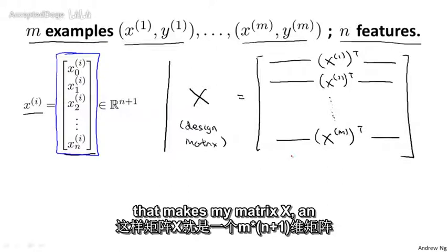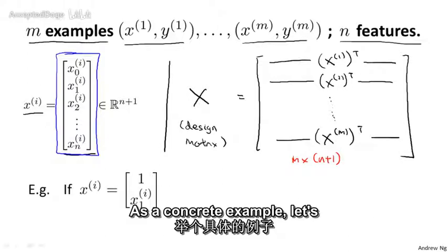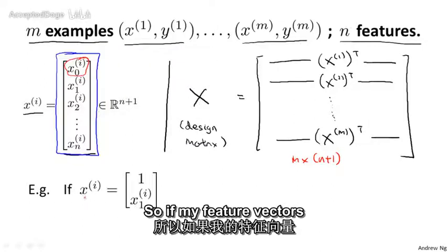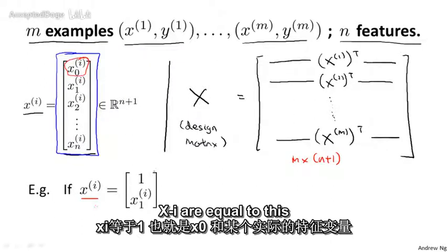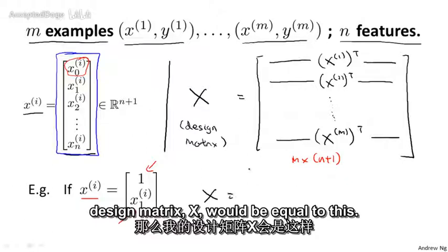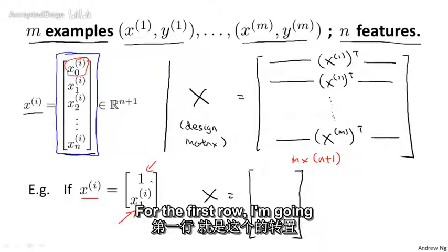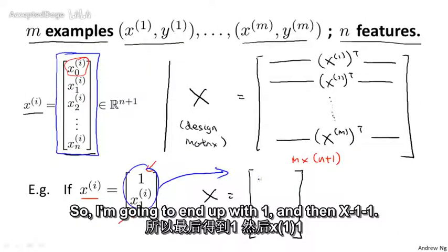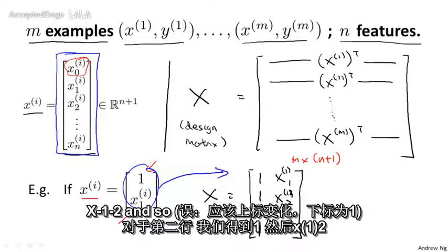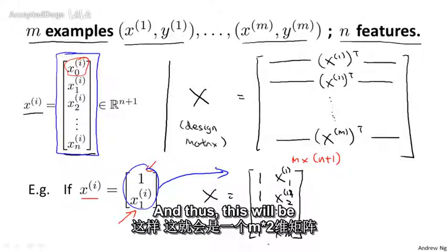As a concrete example, if I have only one feature other than x0, my feature vectors xi are equal to 1 (which is x0) and then some real feature like the size of a house. Then my design matrix X would have first row 1 and x11, second row 1 and x12, and so on down to 1 and x1m, making it an m by 2 dimensional matrix.